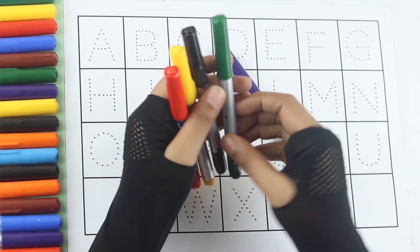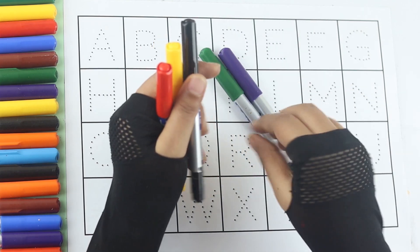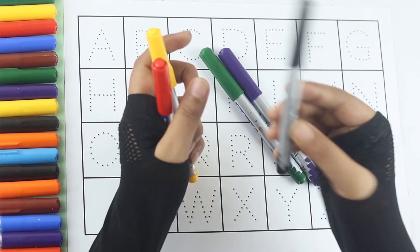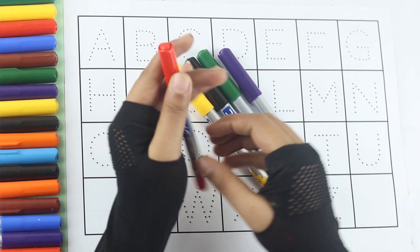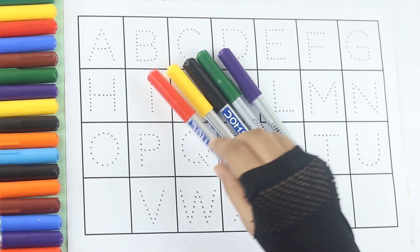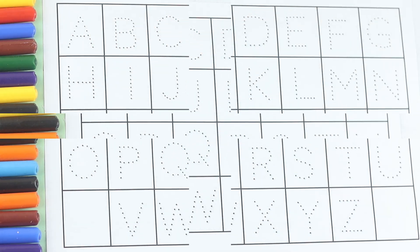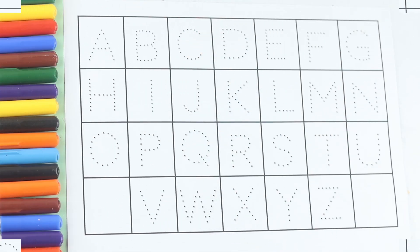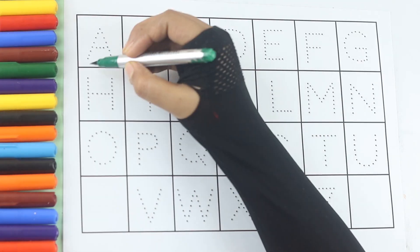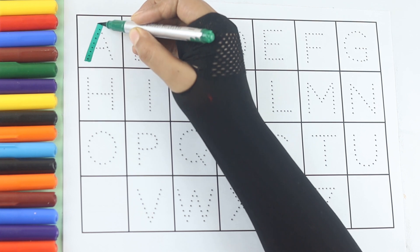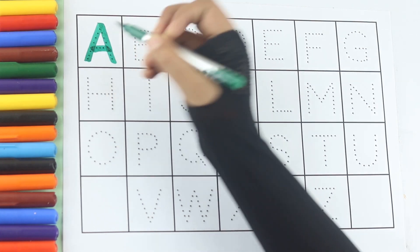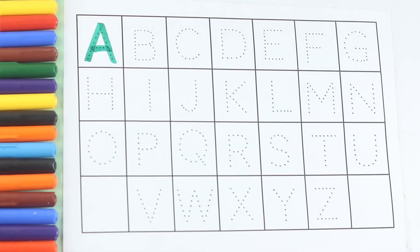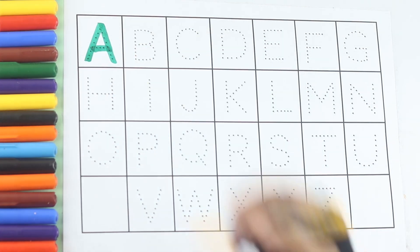Violet color, green color, black color, yellow color, red color, green color. A, A for apple, A for apple.